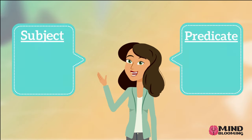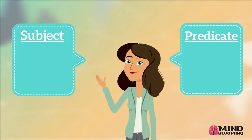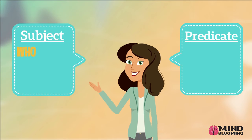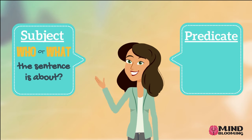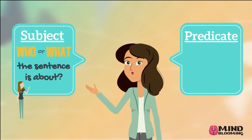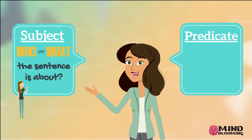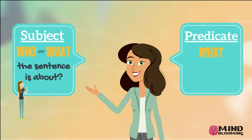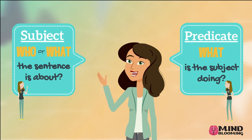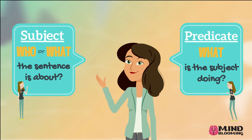To find a subject in a sentence, I need to ask myself who or what the sentence is about. To find out where the predicate is, I need to ask myself what is the subject doing?